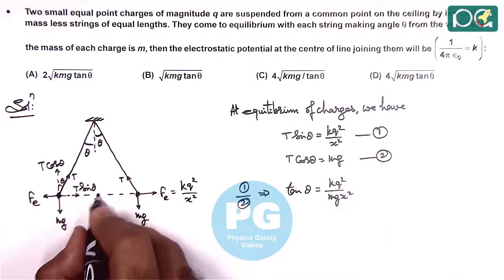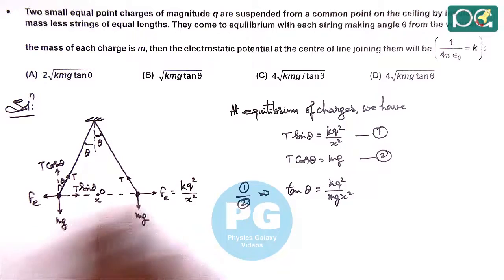We are required to find the potential at the midpoint O of the line joining the two charges.